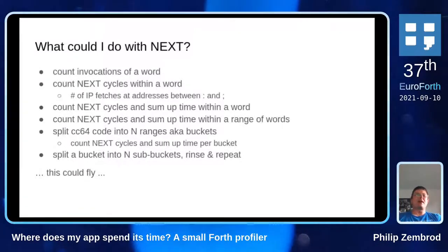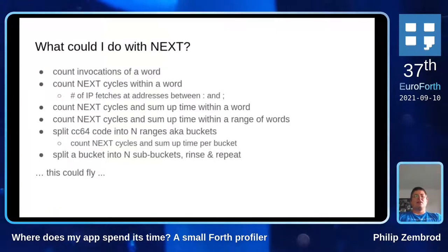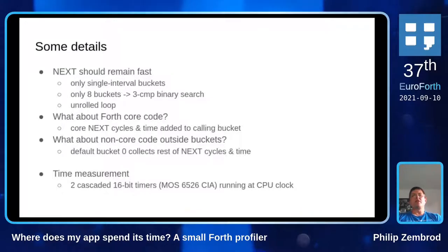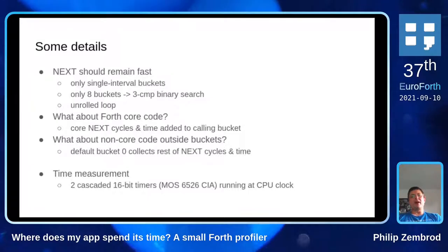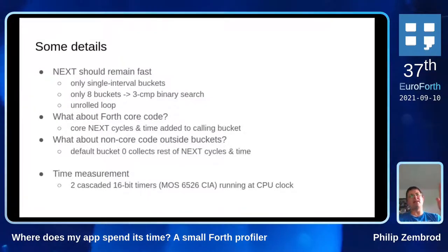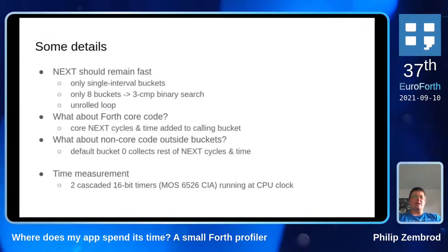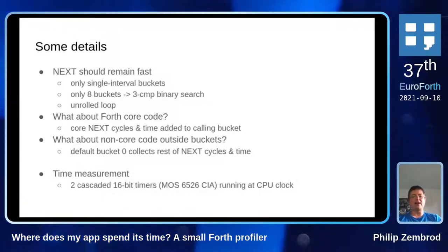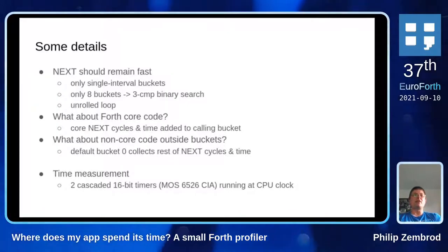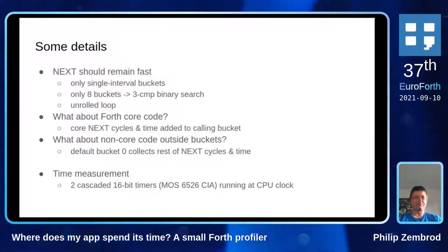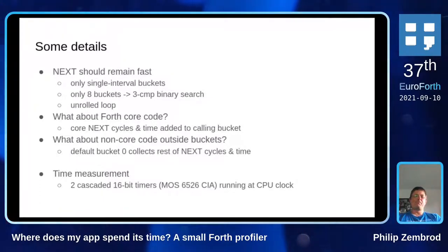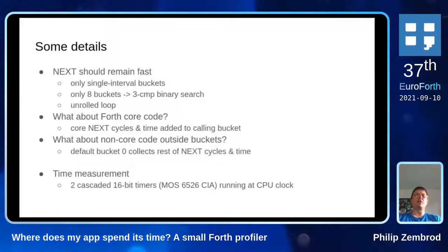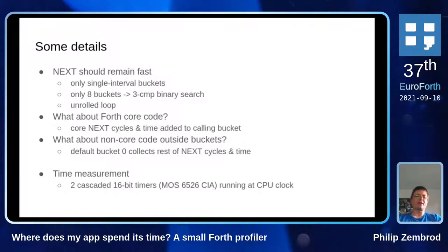This started to feel like something that could actually work. Looking at details: the next routine should remain reasonably fast, so I concluded I would have only single-interval buckets — one starting and one end address. I limited myself to eight buckets, which results in a three-compare binary search to identify a bucket, small enough to unroll the loop. Time spent in the Forth core should be accounted for under the word or bucket that made the call, since I'm optimizing my application, not the Forth core.